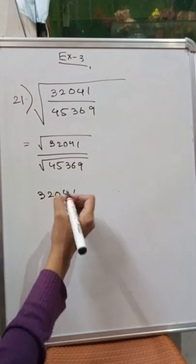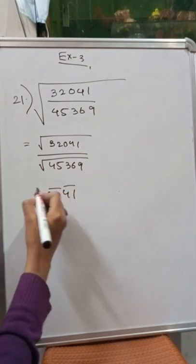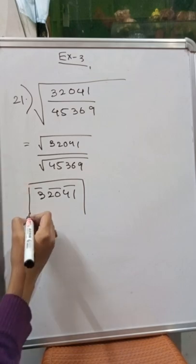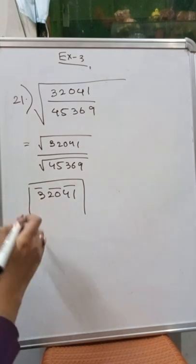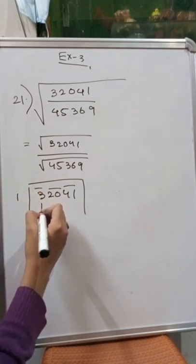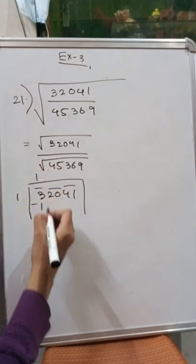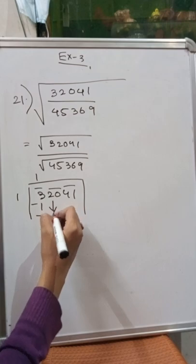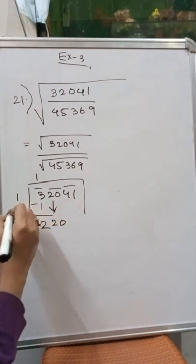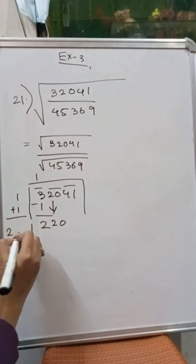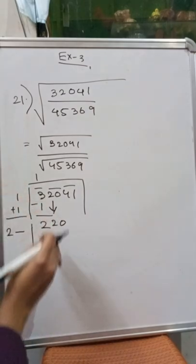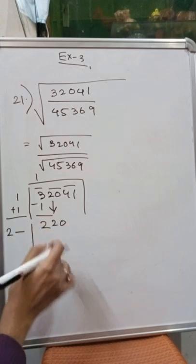We will segment 32041 first. Now we will do the square division. What is the square number below 3? The square number below 3 is 1. So we place 1 here and 1 here, and if we subtract we get 2. This 2 will come down, giving us 20. We add 1 and get 2, then a dash — we have to place some number so that 220 or less than 220 comes.